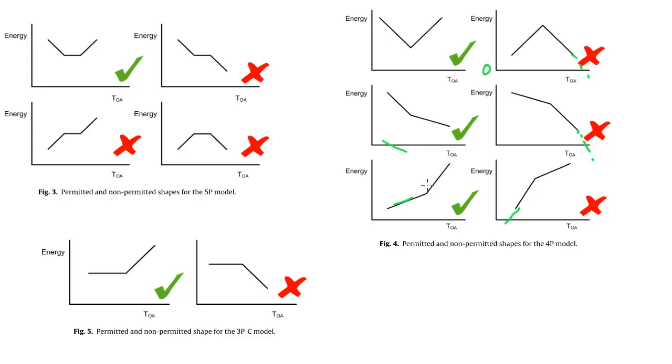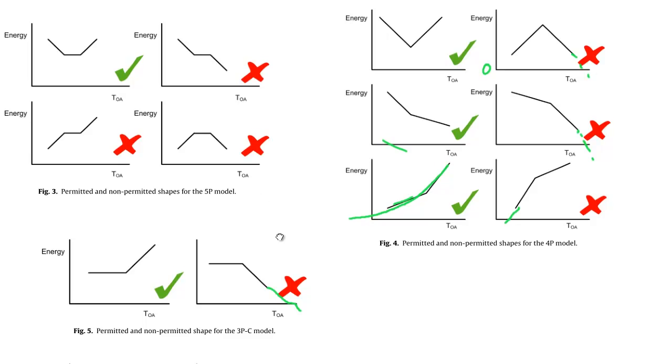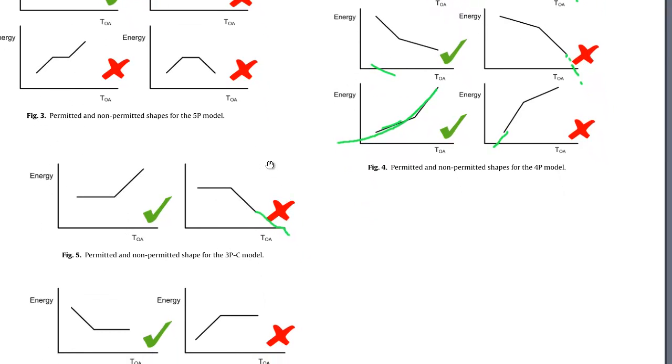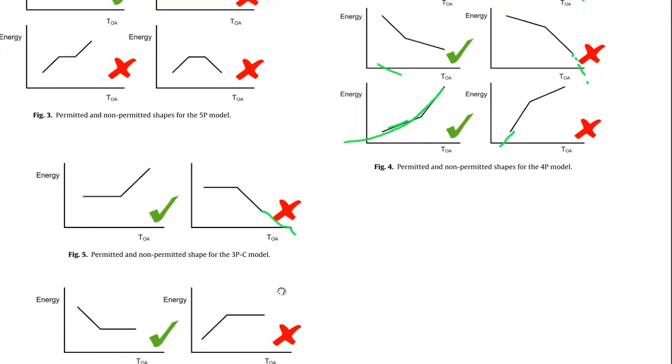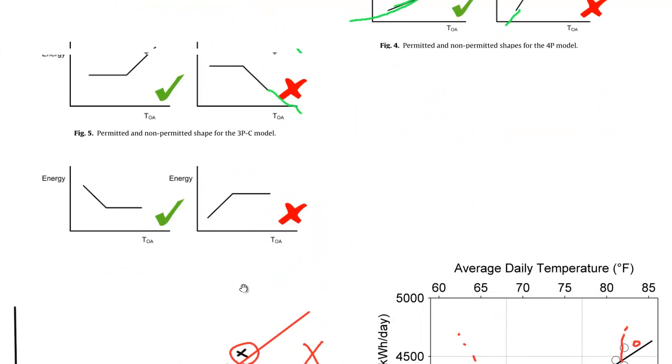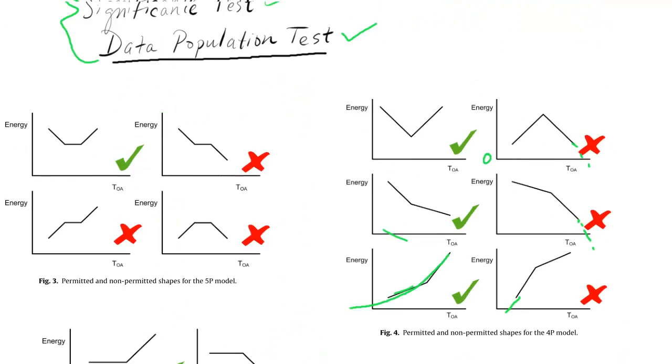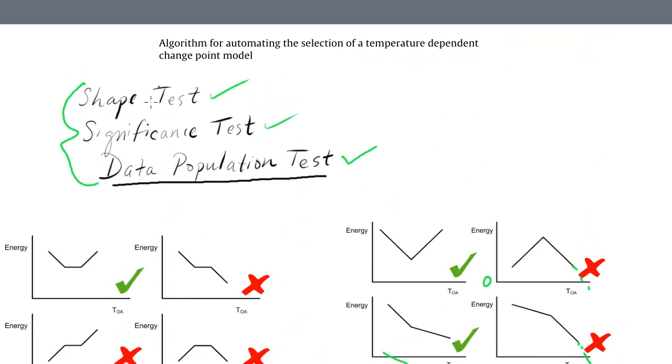Whereas this looks as though it's curving and just not getting to zero, which is what we would like. So for the 3PC model, we don't want this going down. For this one here, we also don't want this going down towards zero. So that was the first test, the shape test.